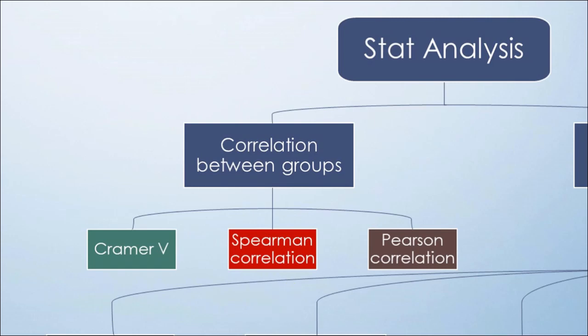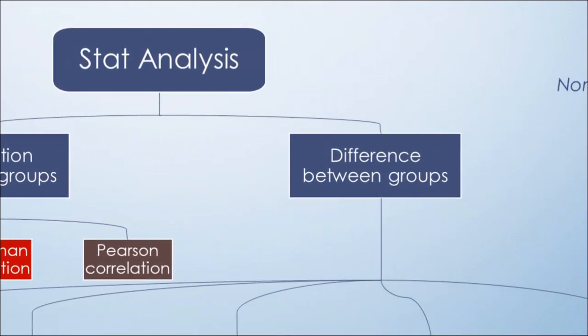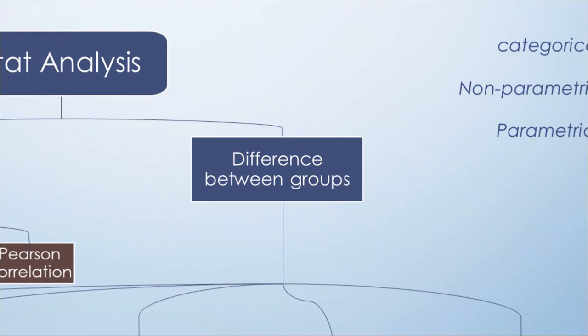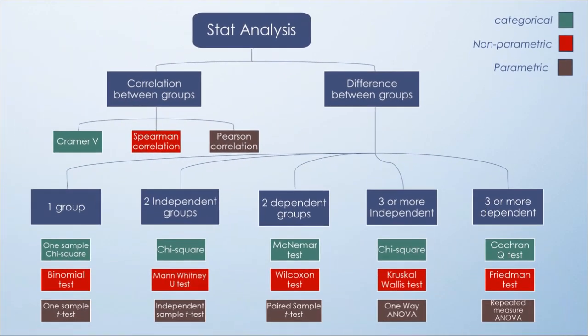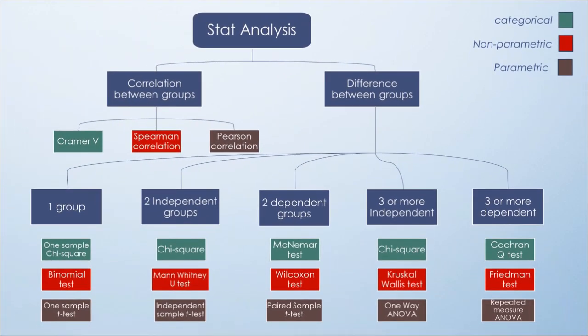Selecting tests to see difference between groups will be guided by dependency and numbers of groups. The rest of the mind map will show all the possibilities in number and dependency.